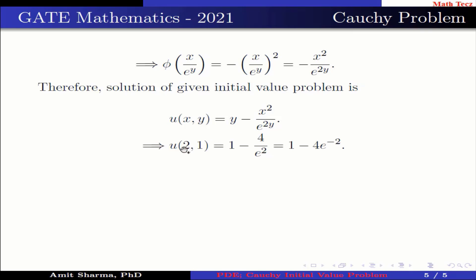This implies u(2, 1) equals 1 minus 4 divided by e squared, which can be written as 1 minus 4 times e to the power minus 2. Hence, option 3 is correct.